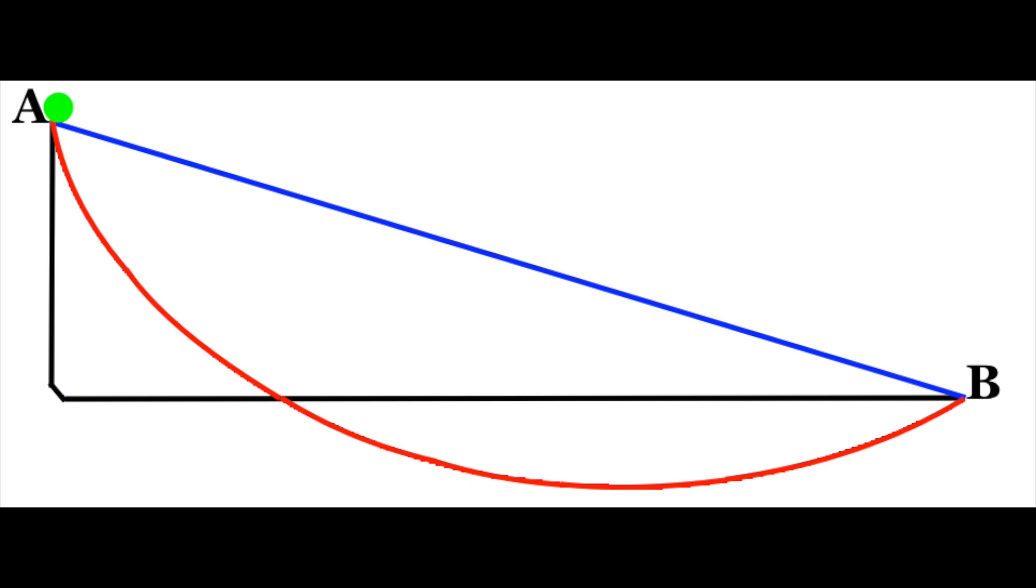So there are three ways via which you can roll the ball. The first one is, let's call it the blue line, and it's a straight line from A to B.